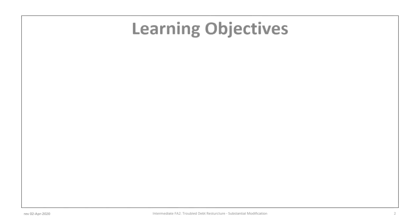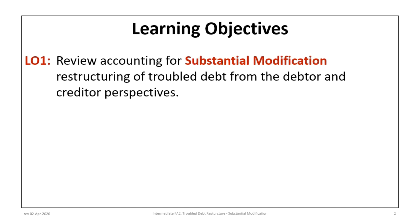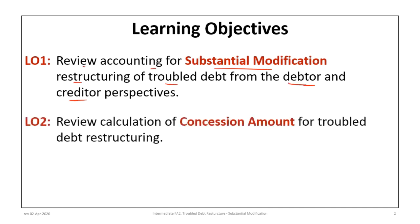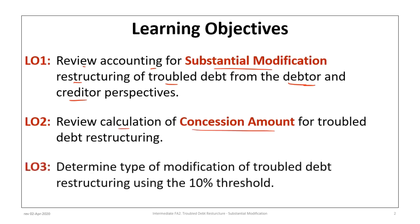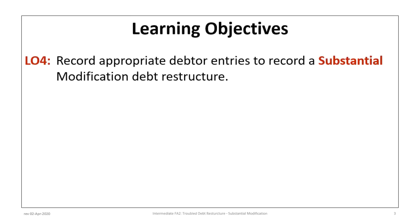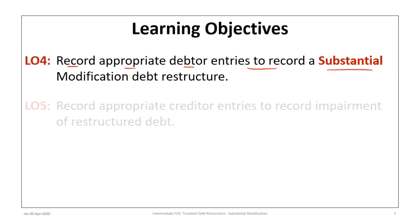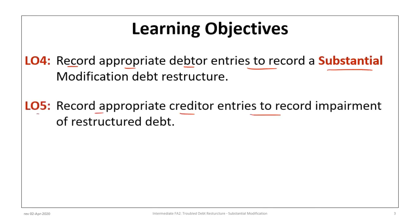This tutorial has five learning objectives. The first is to review the accounting for substantial modification restructuring of troubled debt from both debtor and creditor perspectives. The second is to review the calculation of the concession amount for troubled debt restructuring. Third, to determine the type of modification using the 10% threshold — that's how we'll know this is a substantial modification. Fourth, to record any appropriate debtor entries for substantial modification, and fifth, to record the appropriate creditor entries to record the impairment of any restructured debt.